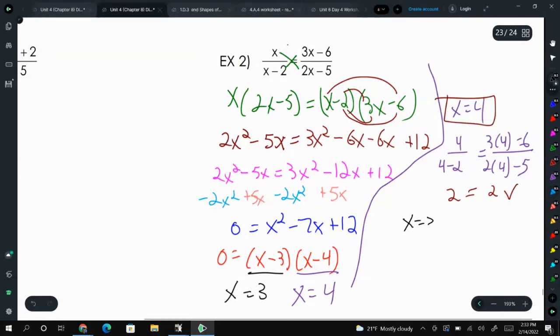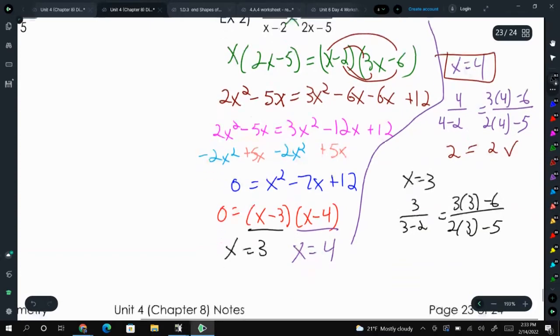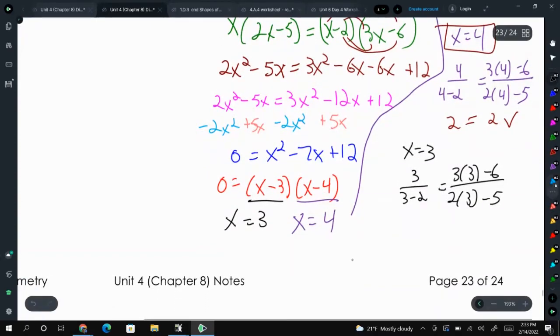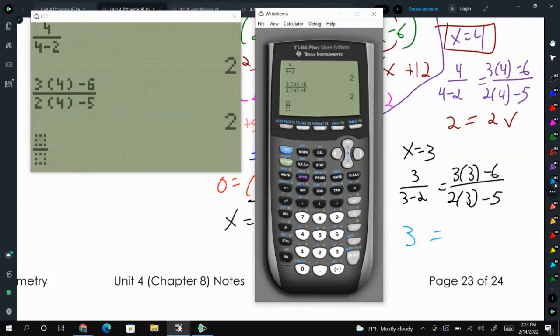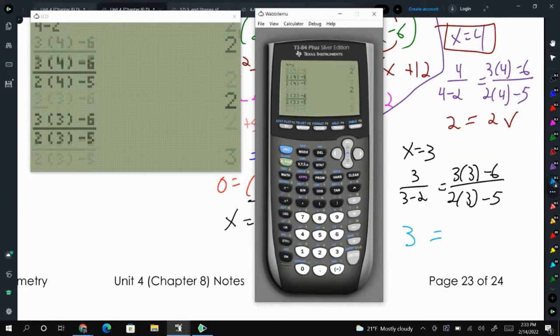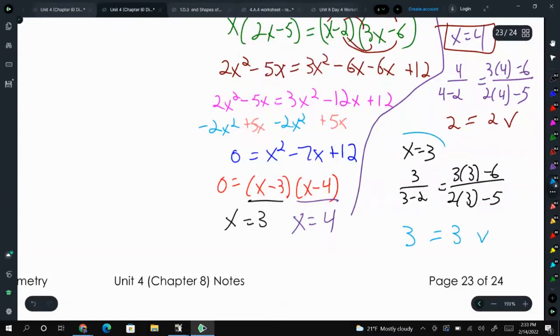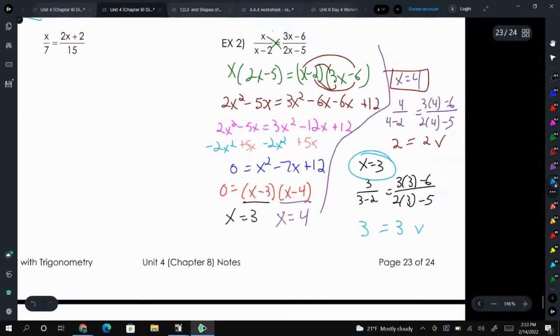Now we're going to try x equals 3. So 3 over 3 minus 2 equals 3 times 3 minus 6 over 2 times 3 minus 5. Well, the left side, that's pretty easy. 3 over 3 minus 2, 3 minus 2 is 1, 3 over 1 is 3. The right side, I could probably work my way through that, but it's very easy to make mistakes. But we hope we get 3, and we do get 3. So that works. So x equals 3 is our solution as well. So we have 2 of them there.